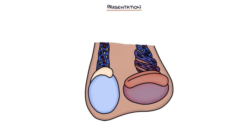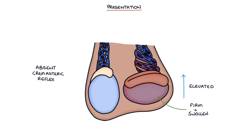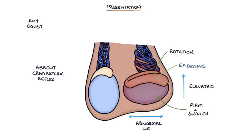The examination findings with a testicular torsion are a firm swollen testicle, an elevated or retracted testicle, absence of the cremasteric reflex, abnormal testicular lie often with a horizontal testicle, and rotation so that the epididymis is not in the normal posterior position. If there's any doubt about whether a patient might have testicular torsion, always get an immediate senior urology opinion.